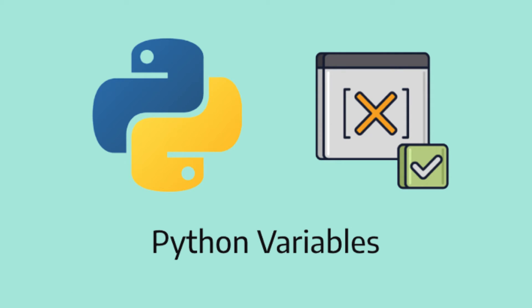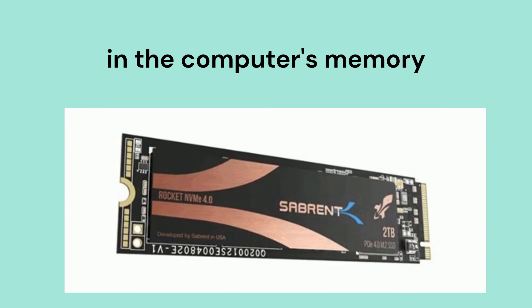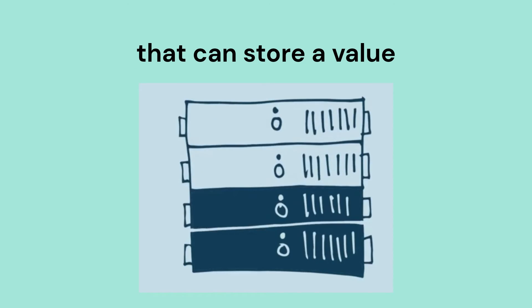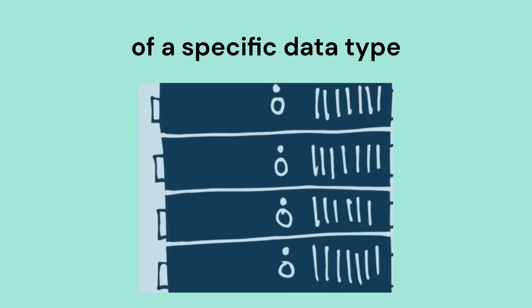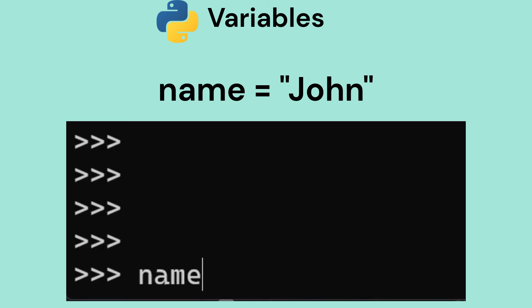Now that we've seen different data types, let's talk about variables. A variable is a named storage location in computer memory that can store a value of a specific data type.